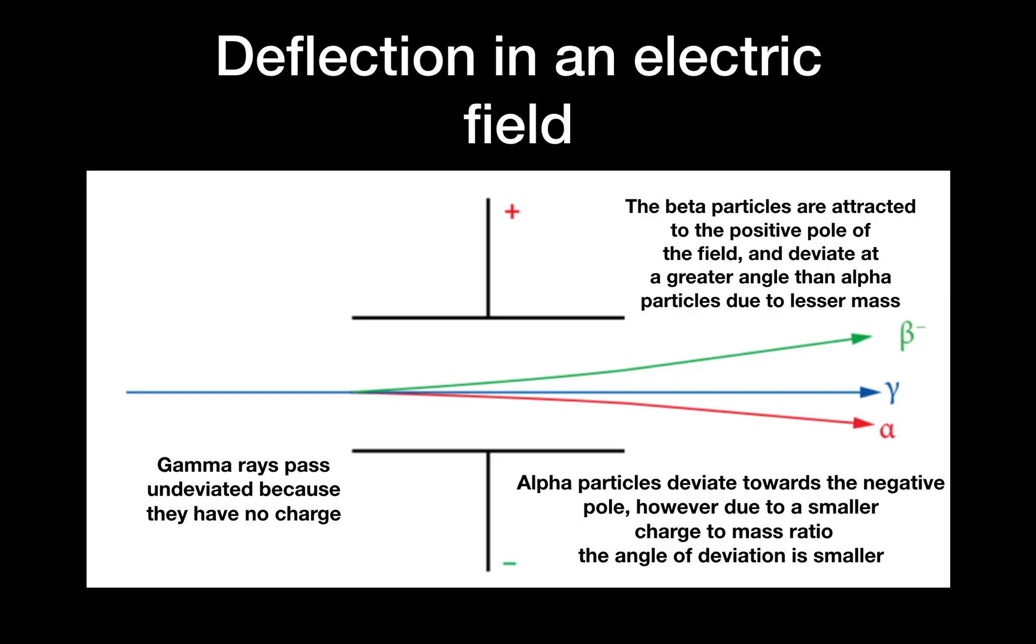Right, so we will talk about deflection in an electric field. An electric field has two poles, a positive pole and a negative pole. Because alpha particles are positively charged they will be deflected towards the negative pole because opposites attract. Beta particles are negatively charged therefore they will be attracted towards the positive pole. Gamma rays have no charge so they pass right through undeviated.